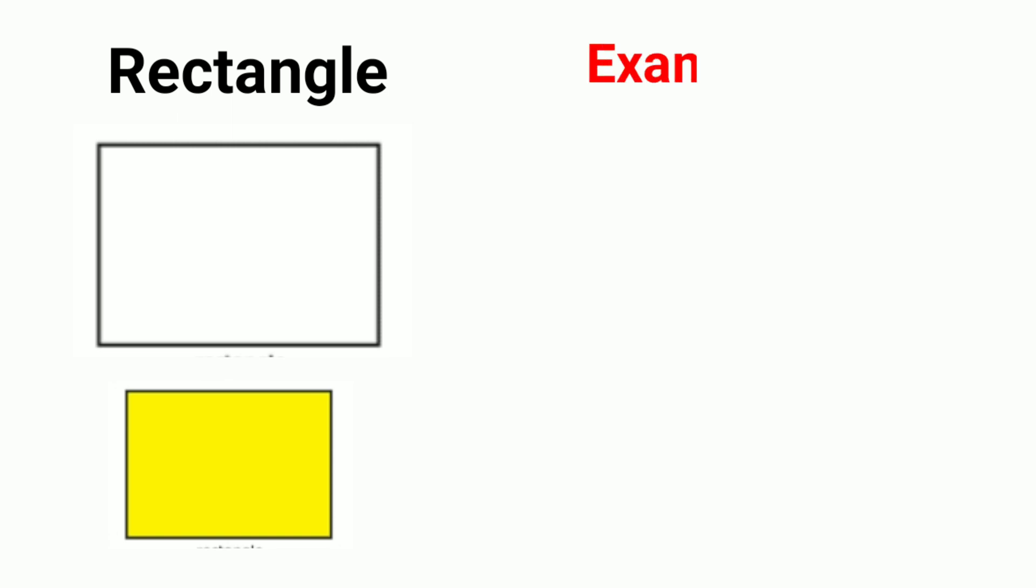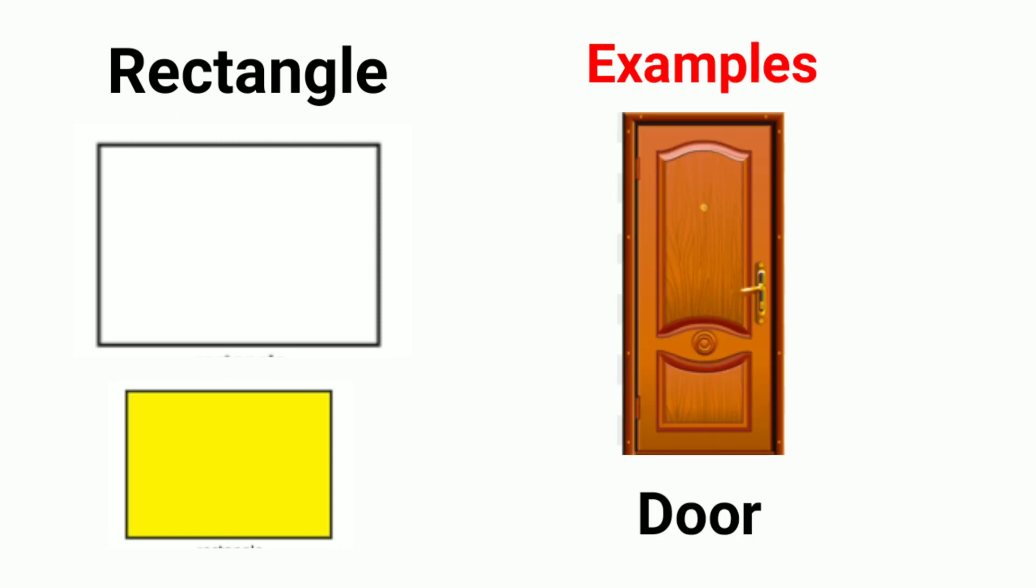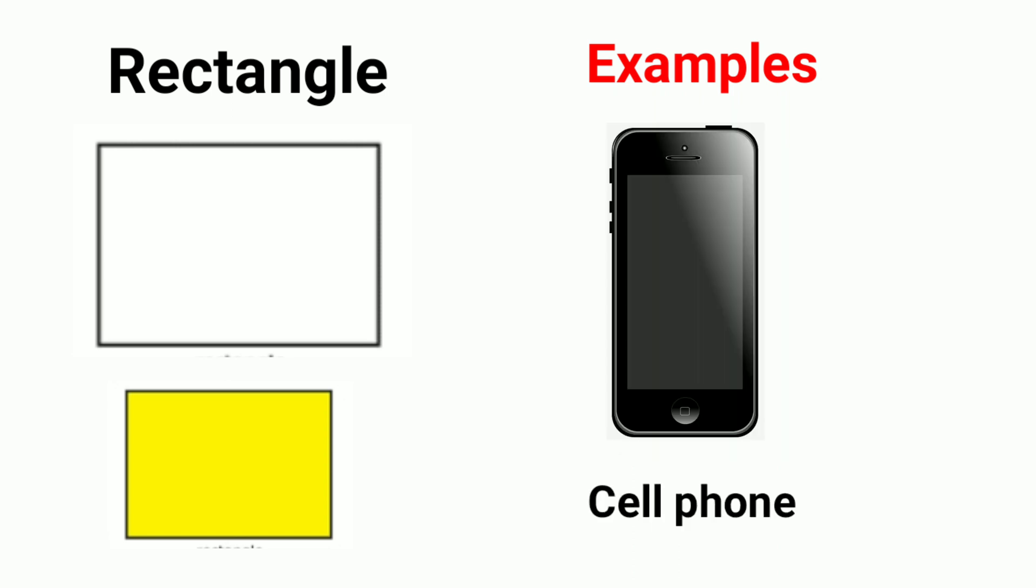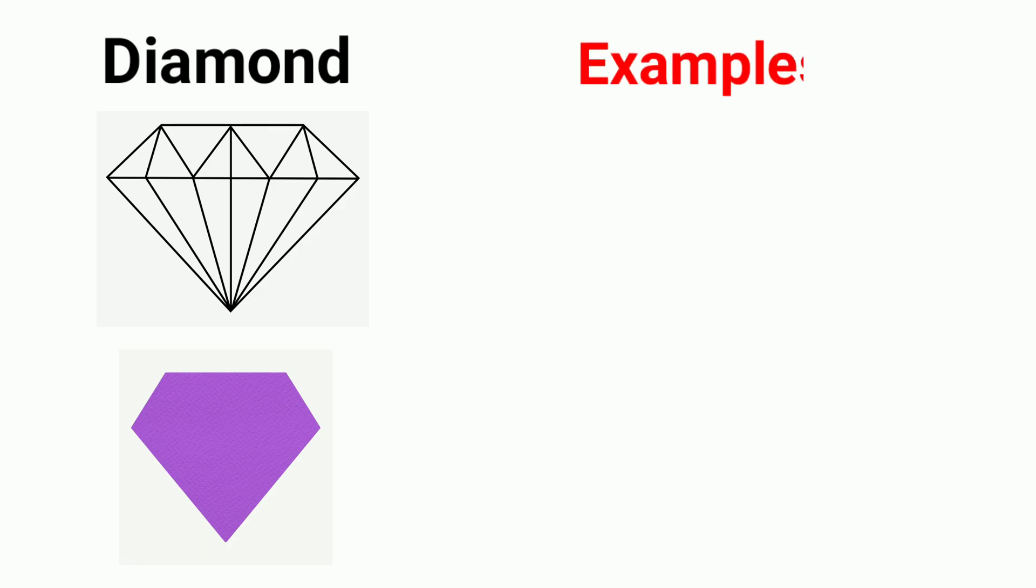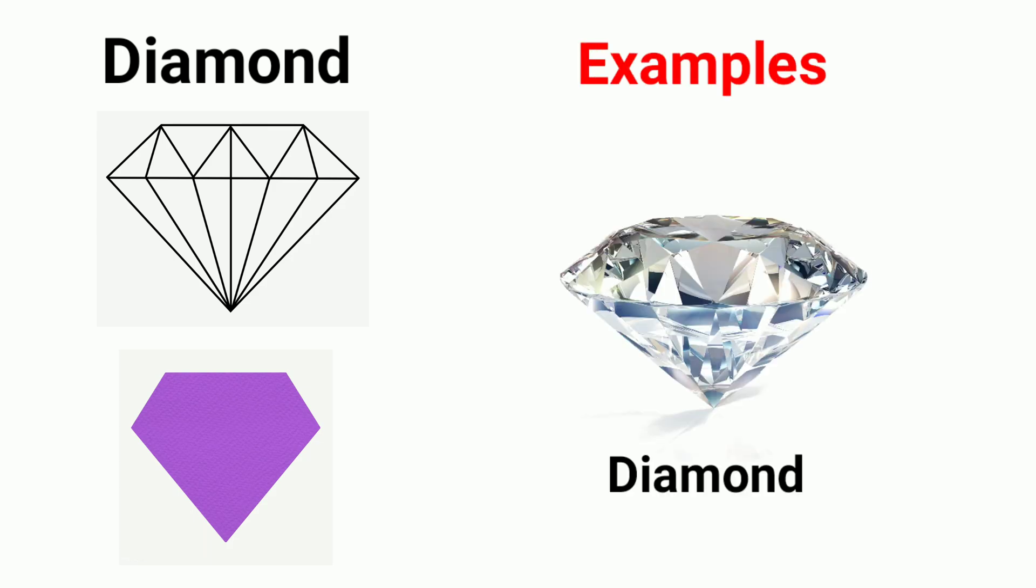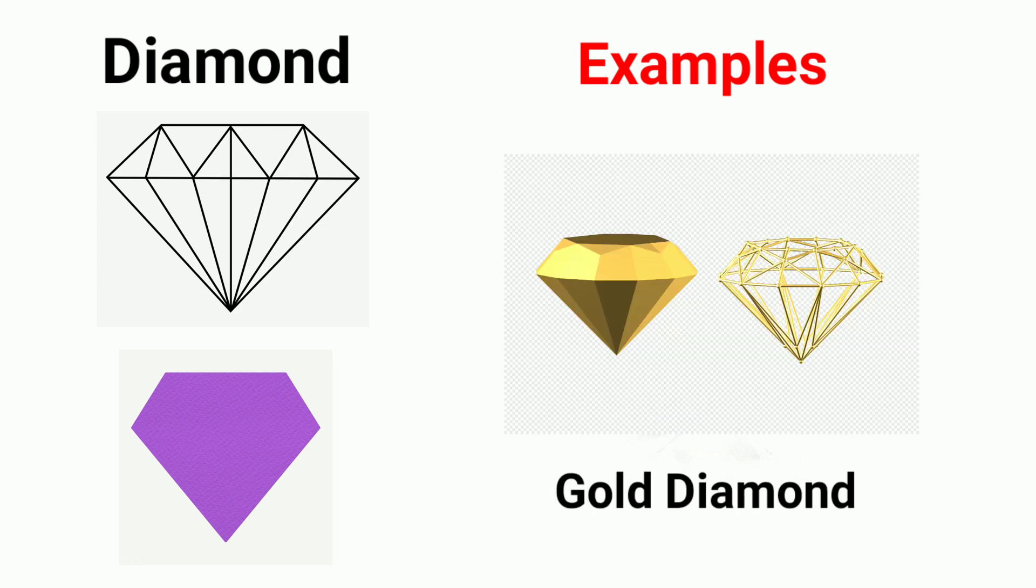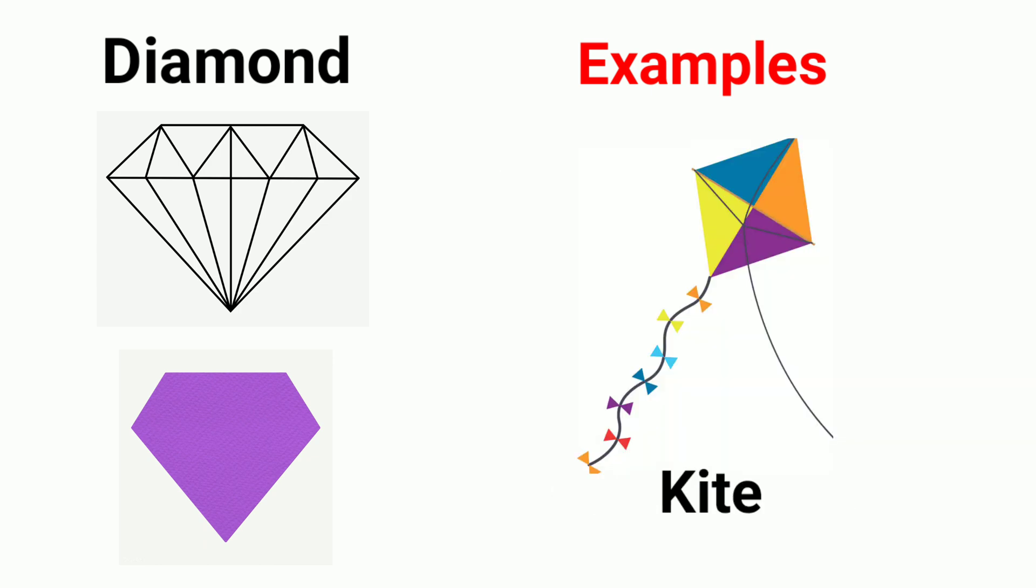Examples of rectangle shapes: door, cell phone, computer. Diamond. Examples of diamond shapes: diamond gold, diamond kite. Star examples of...